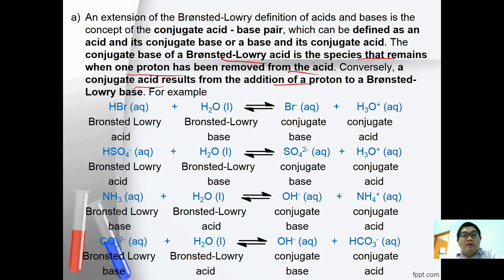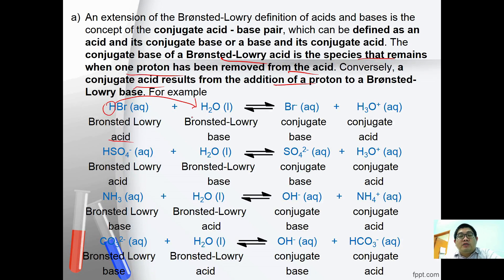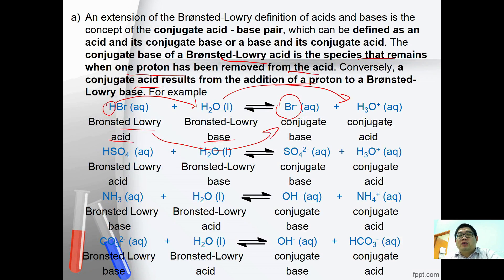For example, when HBr reacts with water to give Br- and H3O+, the H+ from HBr is donated to water. Therefore, HBr is a Bronsted-Lowry acid acting as a proton donor, while H2O acts as a proton acceptor and is therefore a base. After donating H+, HBr becomes Br-, which is called the conjugate base. After water accepts the proton, it becomes H3O+, which is called the conjugate acid.